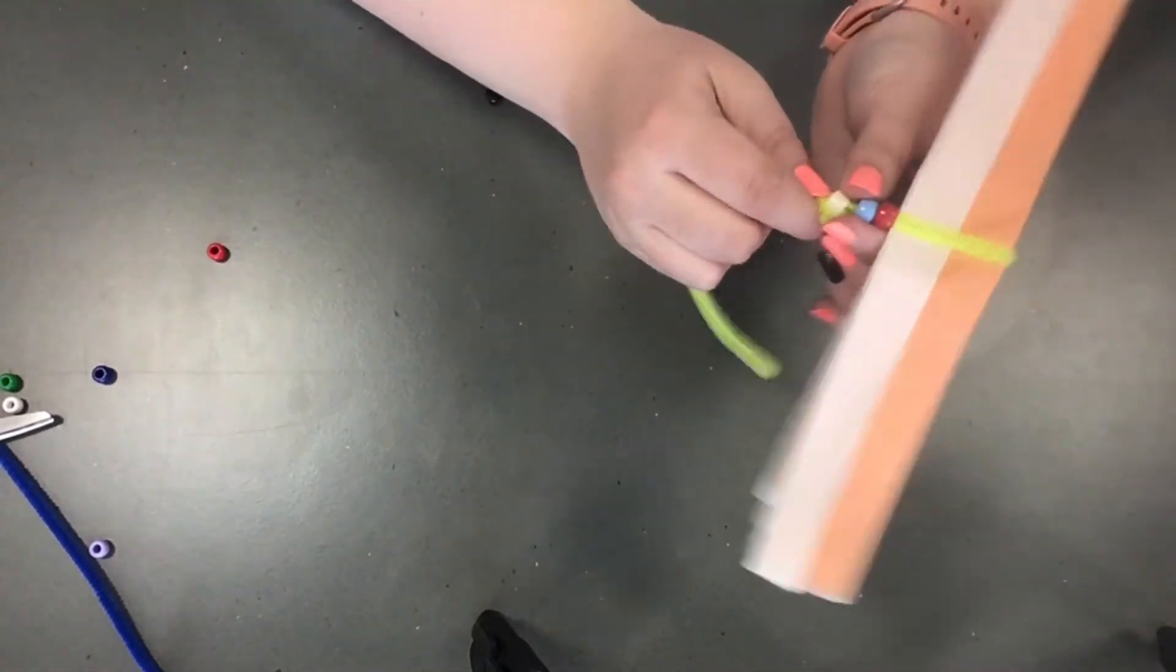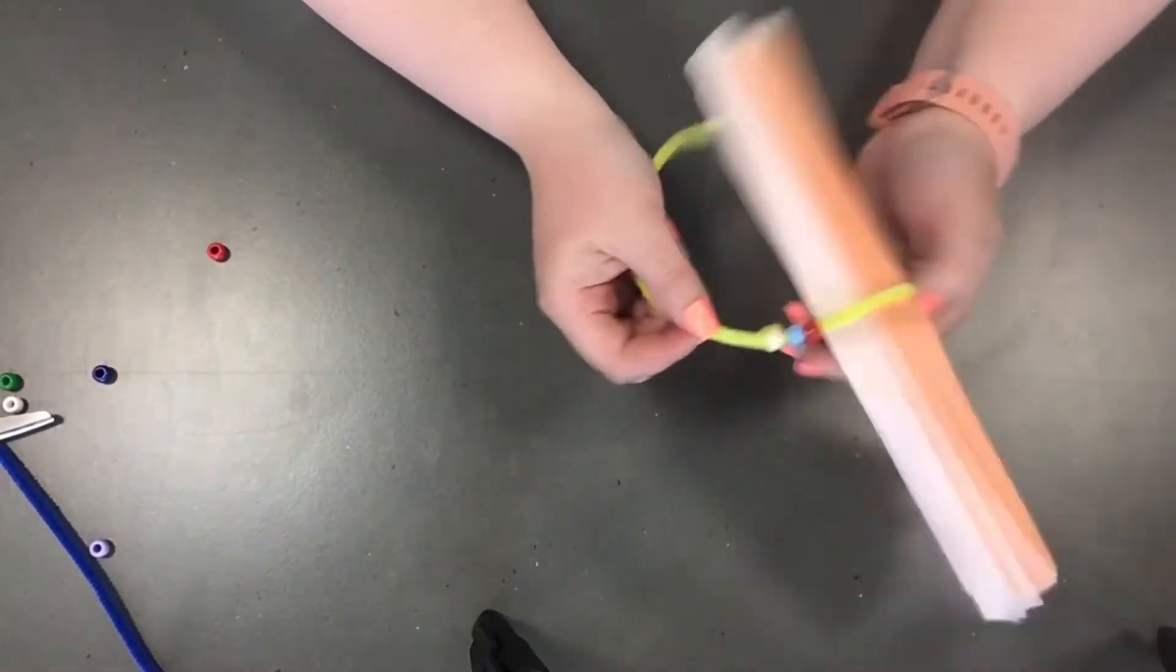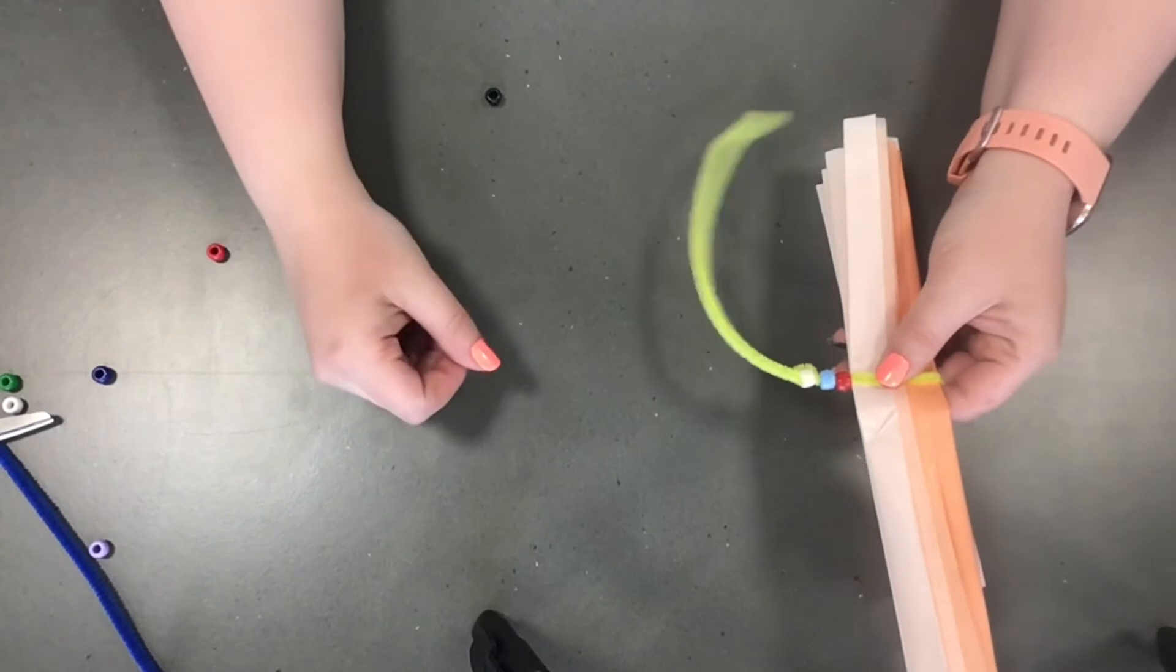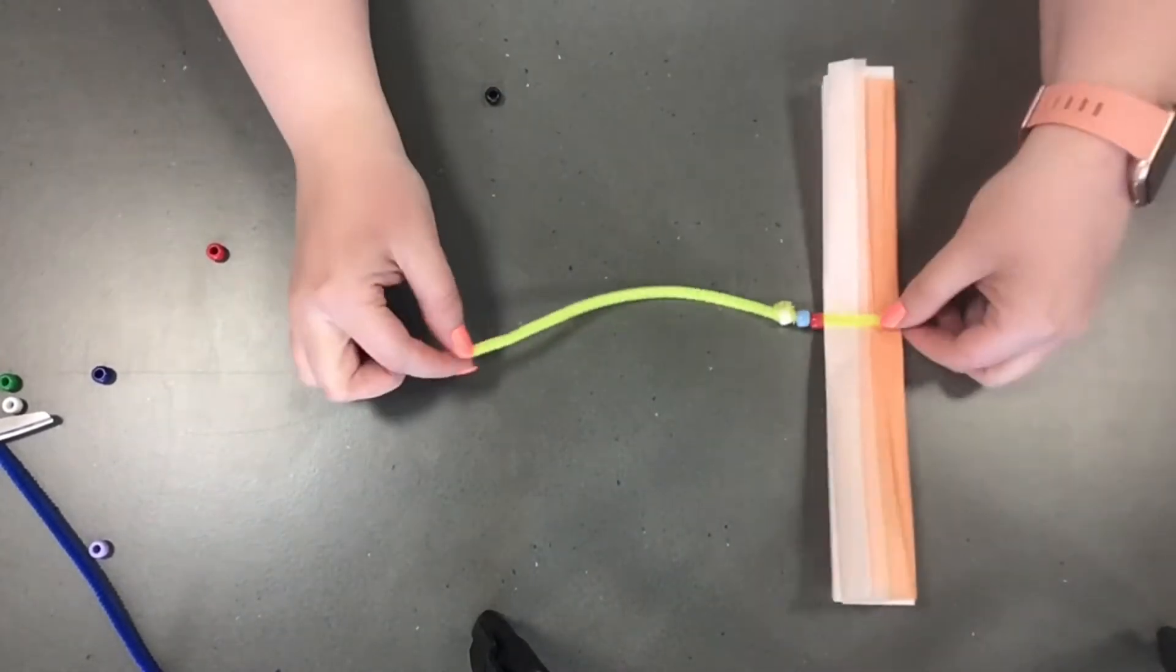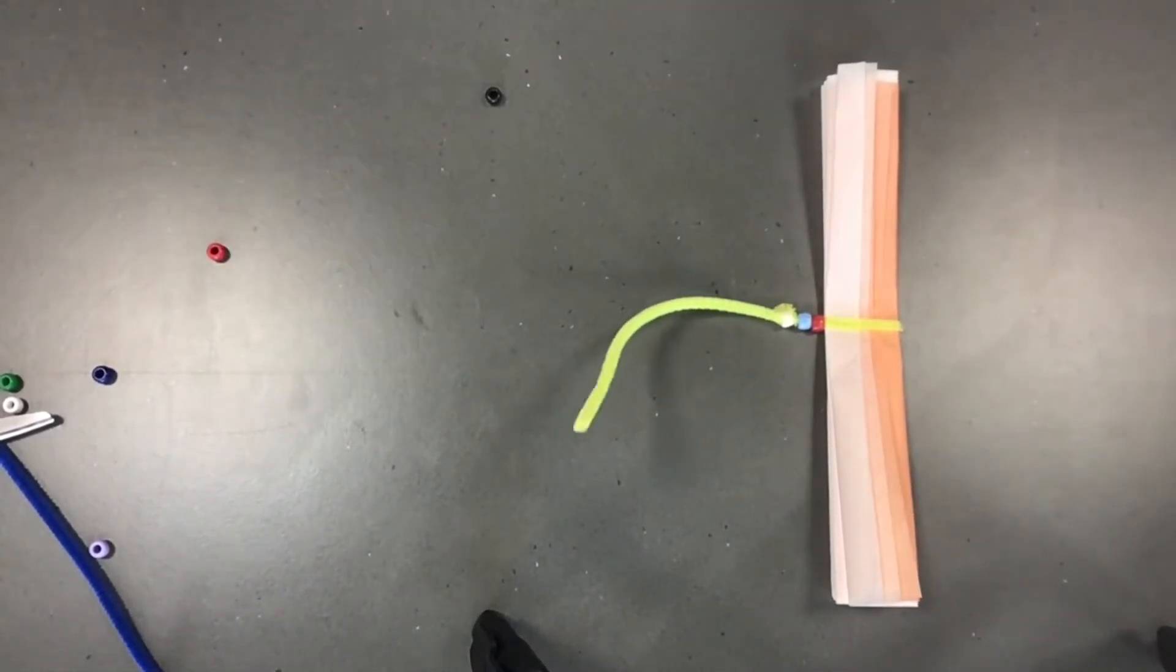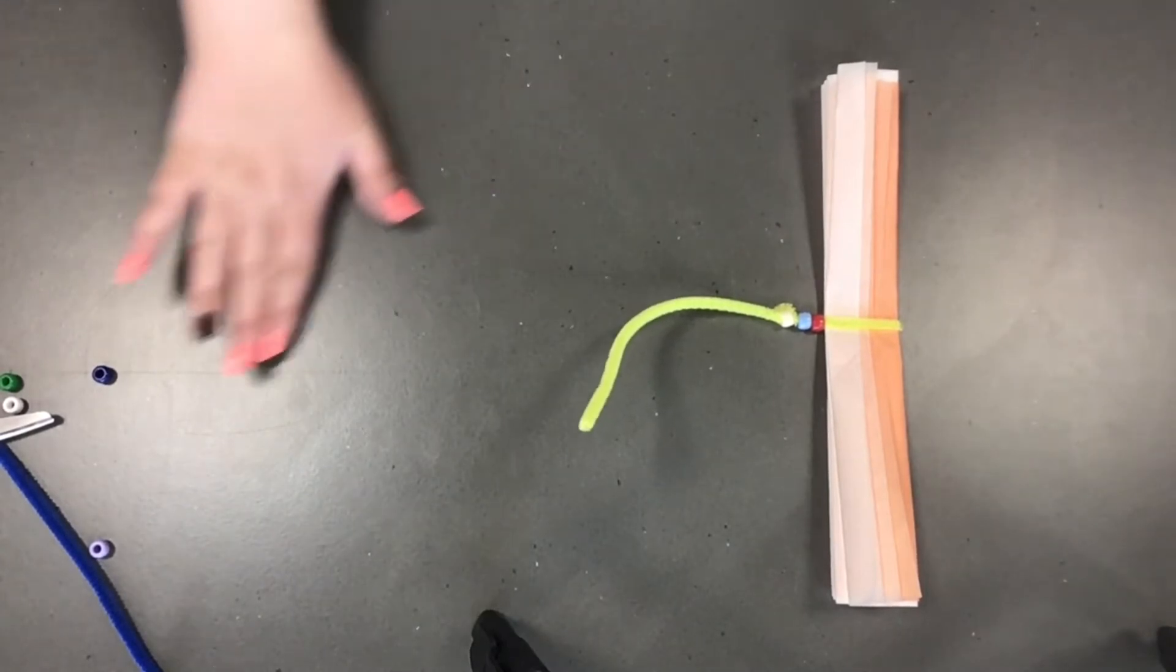And that'll make it so that this doesn't come undone and get loose so your flower doesn't fall apart. And then you have your stem. Mine curled up a little bit but that's okay. Now that you have your beads on we'll set aside our extras.